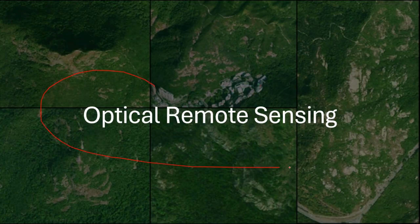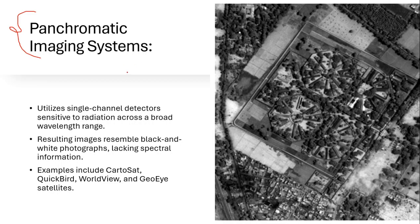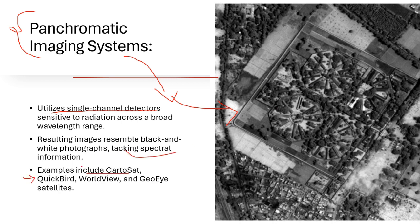In optical remote sensing, we have panchromatic imaging systems that utilize only a single channel detector across a broad wavelength range, resulting in black and white photographs. These systems lack spectral information. Examples of satellites providing panchromatic images include Cartosat, QuickBird, Worldview, and GOI satellites.